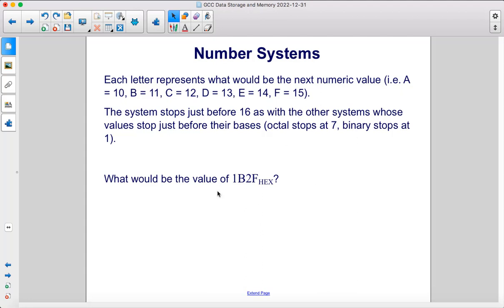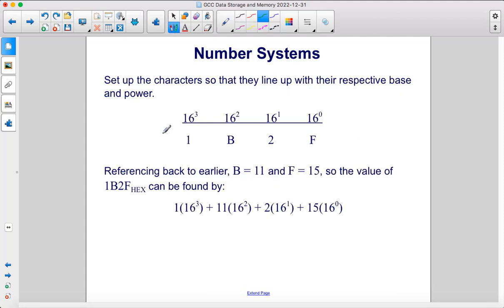So what would be the value in decimal of 1B2F in hexadecimal? First we set up the characters so that they line up with their respective base and power. F goes in the rightmost column, 16 to the 0 power, 2 is in the second column from right, and so on. Referencing back to earlier, B stands for 11 in decimal, F stands for 15. So the value can be found by multiplying each of these values times those values and adding them together. So 1 times 16 to the third power plus 11 times 16 squared plus 2 times 16 plus 15 times 1.